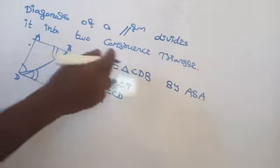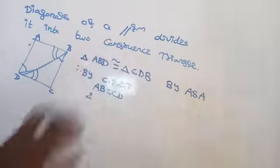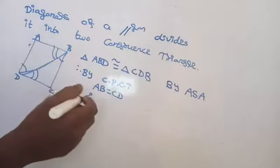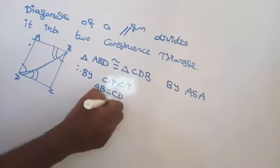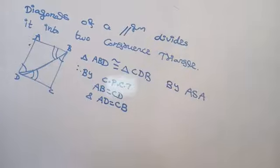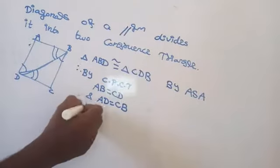AB equal to CD, and then AD equal to CB. AD equal to CB. And angle A equal to angle C — you can say that. Angle A equal to angle C.